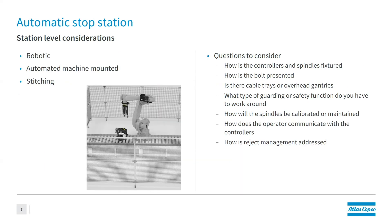For automatic stop stations, the component comes into the station and stops — you might have a robotic cell or automated machine mounting. We want to talk about how the component is presented, how the process is driven, and we need to think about controllers and spindles. In many of these setups you're not going to have just one spindle but multiple, so we have to think about how the bolt is presented — hand-started or bolt-feeder — and where the cables are going from those spindles.